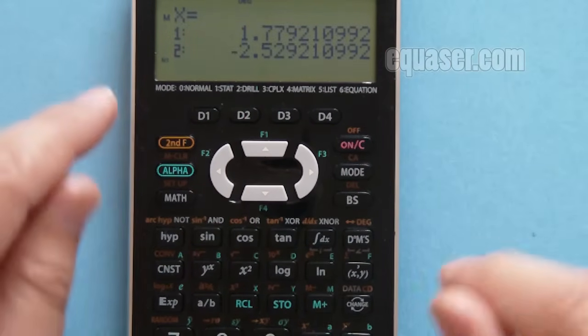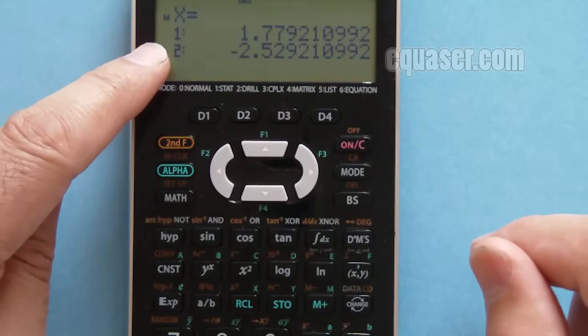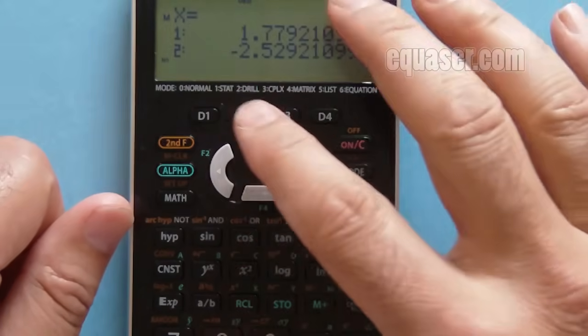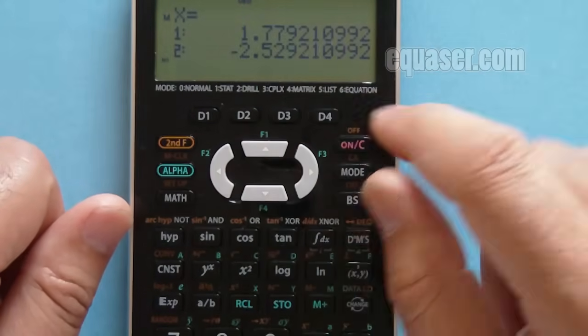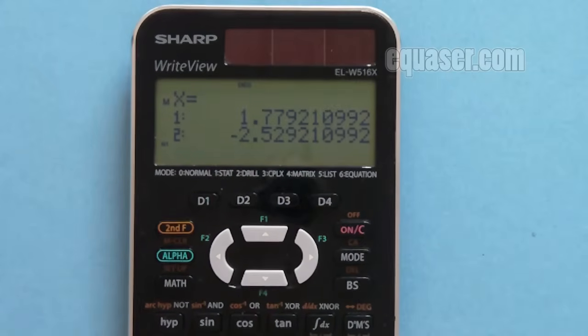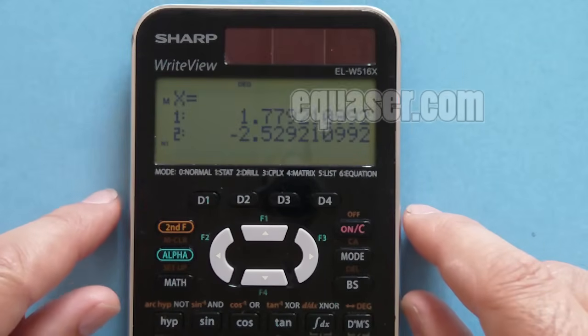As soon as I press equal, the values are displayed. The X values are 1.779 and the second value is negative 2.529. I hope you have enjoyed this tutorial. Thank you for watching.